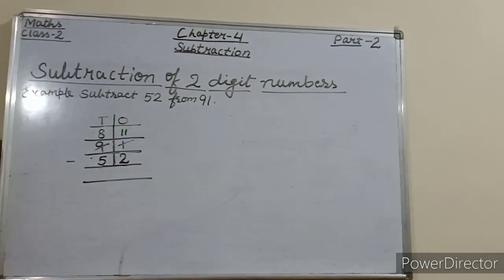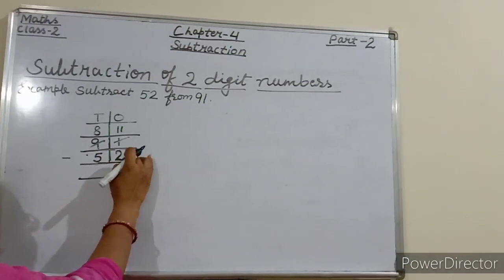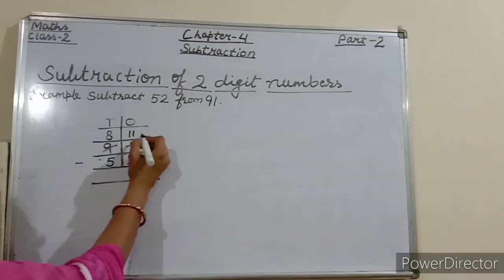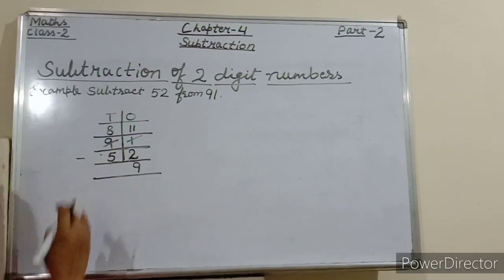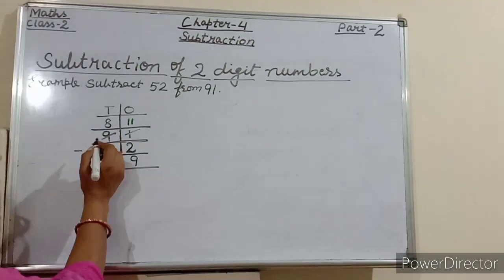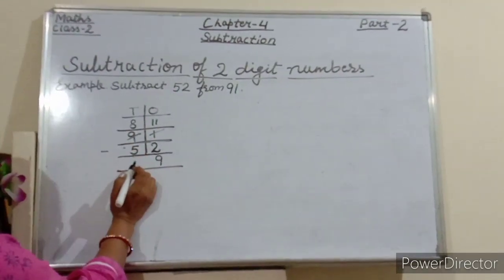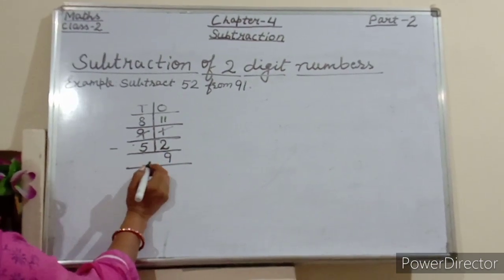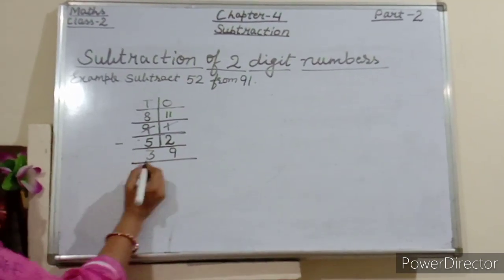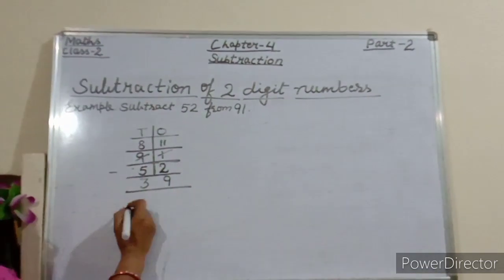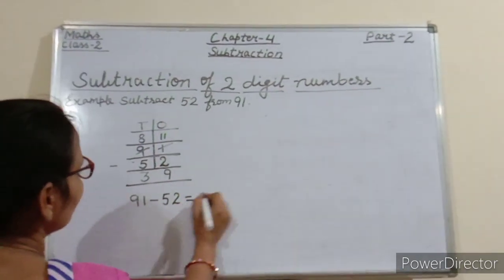Now what we have to do? Now we will subtract 2 ones from 11 ones. So 11 minus 2 is equals to 9. Now we will write 9 under the ones column. Again come to the tens place — subtract 5 tens from 8 tens. So 8 minus 5 is equals to 3. So we write 3 under the tens column. See, 91 minus 52 is equals to 39.